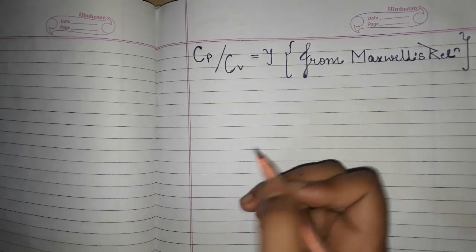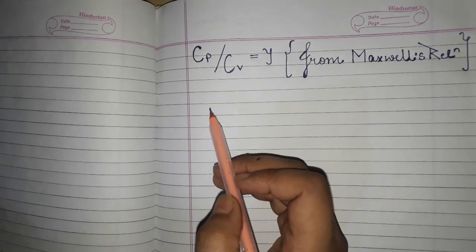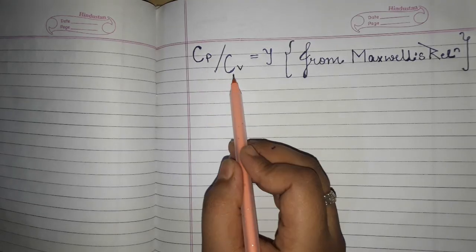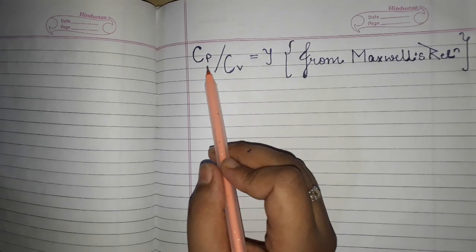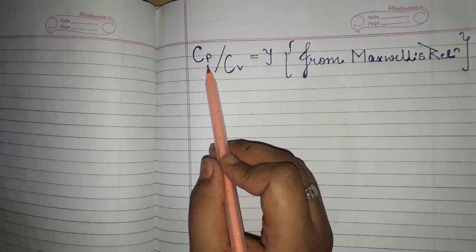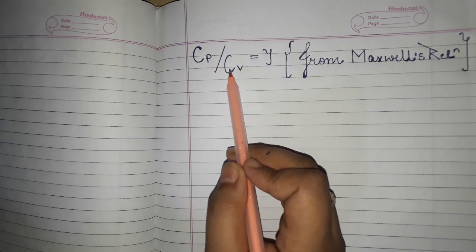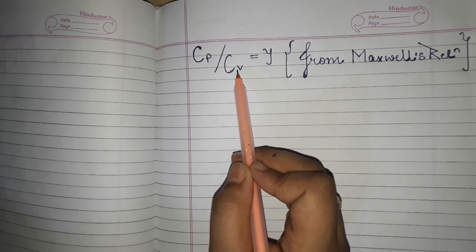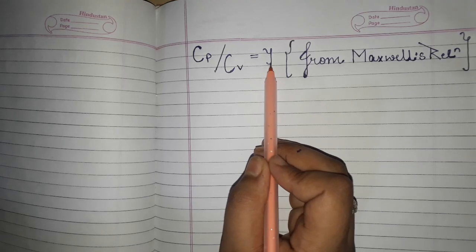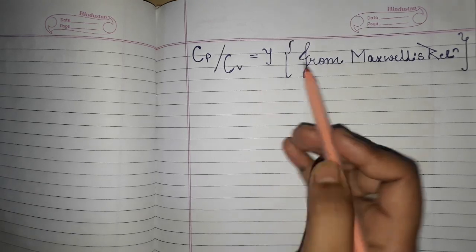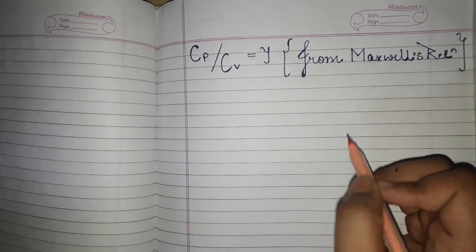Hi friends, in this video we will derive the relation Cp/Cv = γ, that is molar specific heat capacity at constant pressure divided by molar specific heat capacity at constant volume equals gamma, from Maxwell's relation. So let's start.